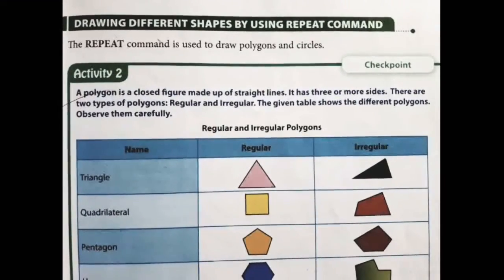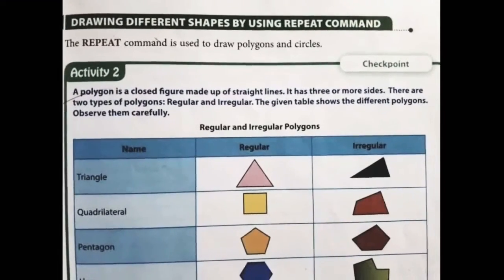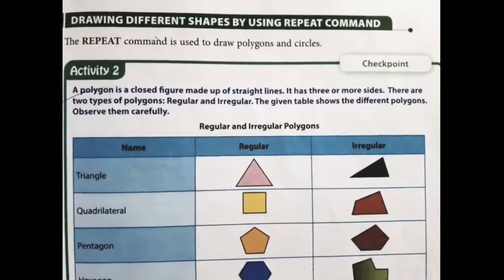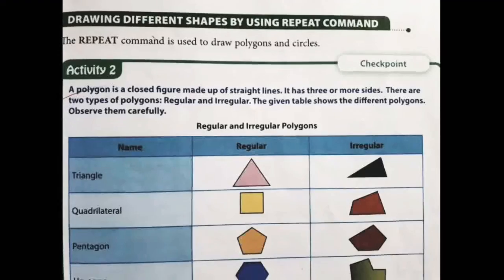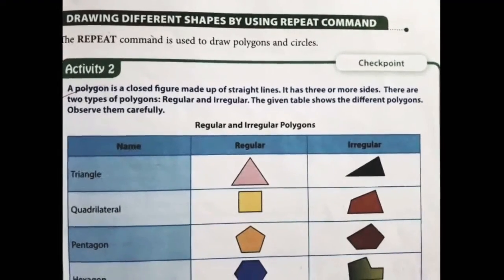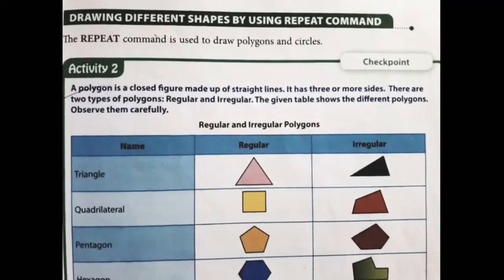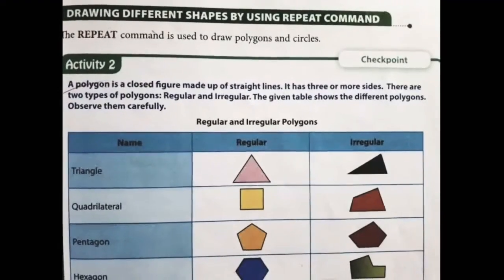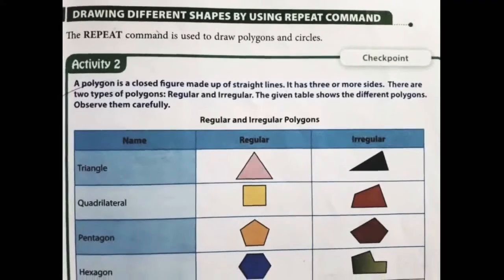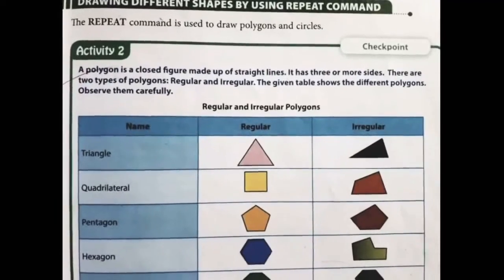The repeat command is used to draw polygons and circles. In activity 2 you can see a polygon is a closed figure made up of straight lines. It has three or more sides. There are two types of polygons: regular polygon and irregular polygon.